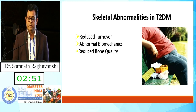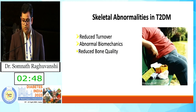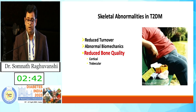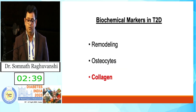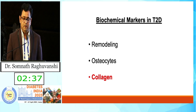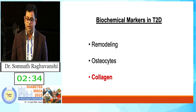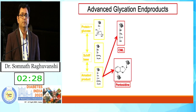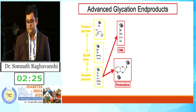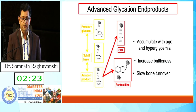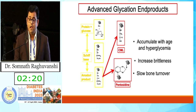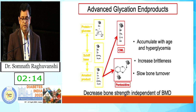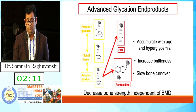There is reduced bone turnover, abnormal biomechanics, and reduced bone quality in both the cortex and trabecular bone in type 2 diabetes. Regarding the bone matrix: there is reduced remodeling and reduced number of osteocytes. Carboxymethyl lysine (CML) and pentosidine — these are advanced glycation end products (AGEs) — accumulate in collagen and cause disorganization. Accumulation with aging and hyperglycemia increases brittleness and slows bone turnover, decreasing bone incidence independent of BMD.